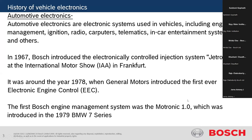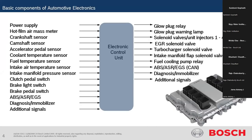The first Bosch engine management system was developed with the name Motronic 1.0, which has various versions available in the market right now. It was introduced in 1979 in a BMW 7 Series vehicle, a very famous vehicle you can search for. That was the first Bosch engine management system.